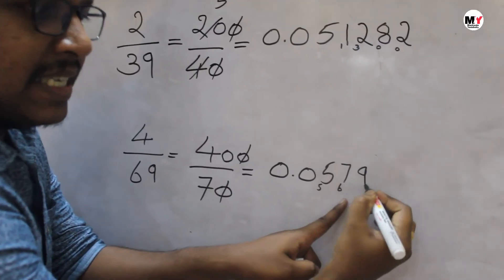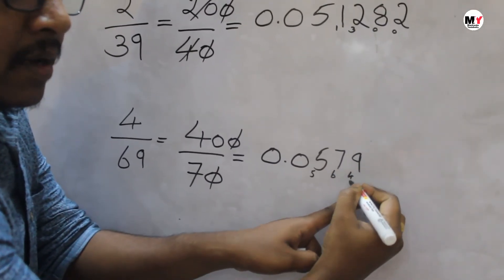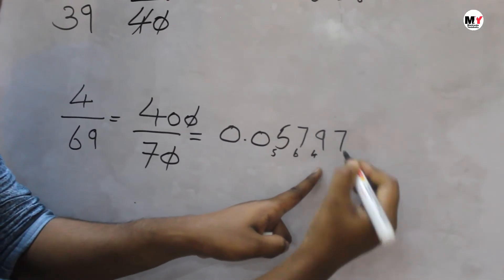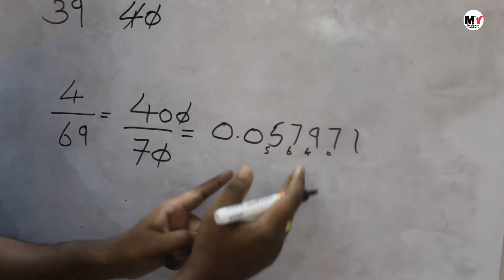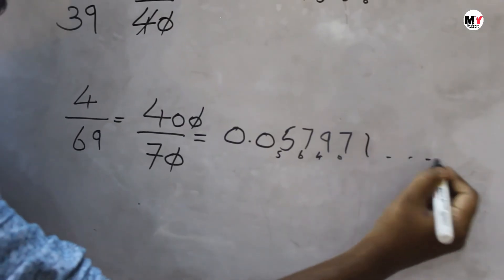7, 9's are 63. And 4 is a reminder. 49. 7, 7's are 49. There is no reminder. Now again, 7, 7, 7's are 7. Like this, we can go on up to any number.